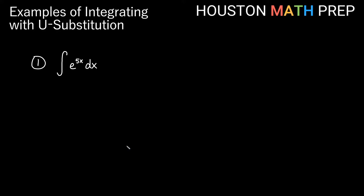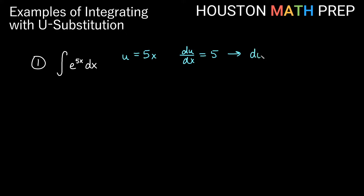Let's look at our first one here. We have the integral of e to the 5x dx. We've got a function of 5x inside of our exponential. I don't want to let u equal the whole exponential itself because the derivative of an exponential is another exponential, and I don't have a separate exponential in here. So a good choice for u-substitution here would be that u is equal to 5x. And if u equals 5x, then du/dx is equal to 5.